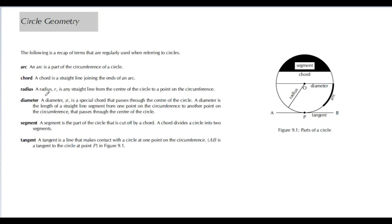Radius — normally labeled r — is a straight line from the center of the circle to any point on the circumference. That would be the distance from the center, normally labeled O, to any point on the circumference. The circumference is the border of the circle.